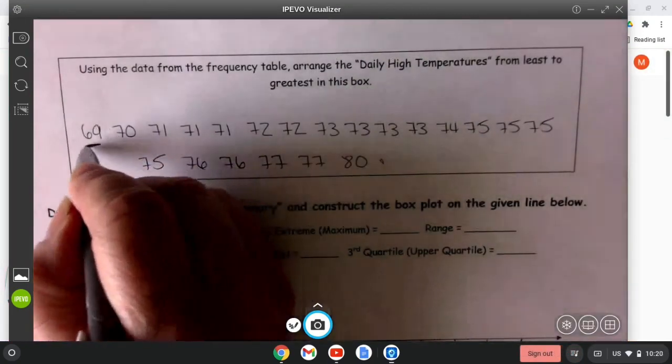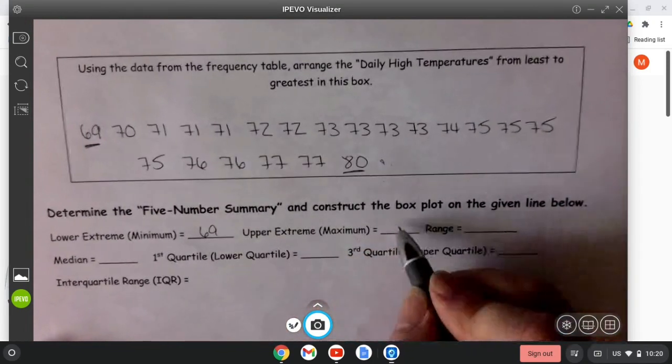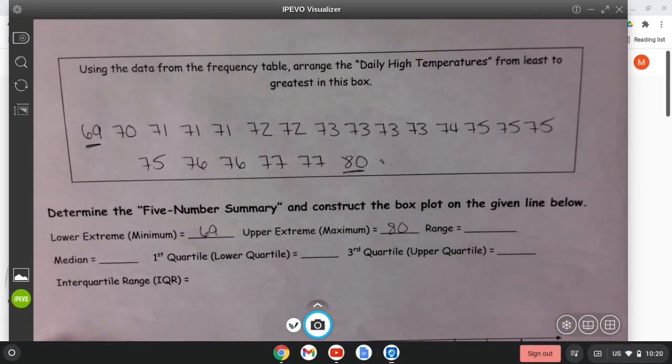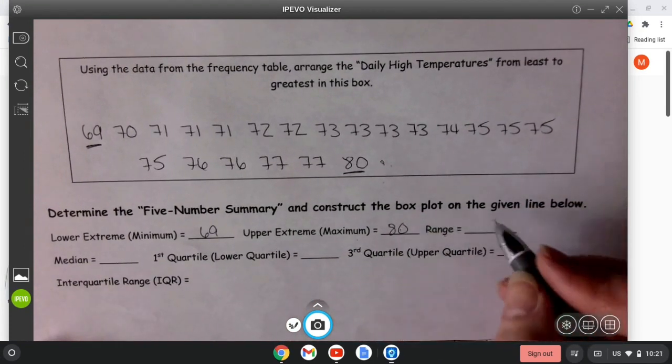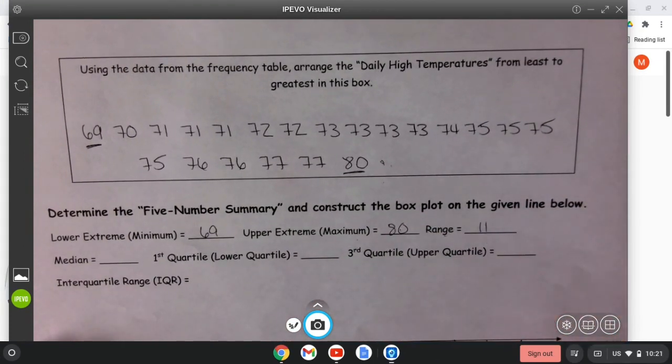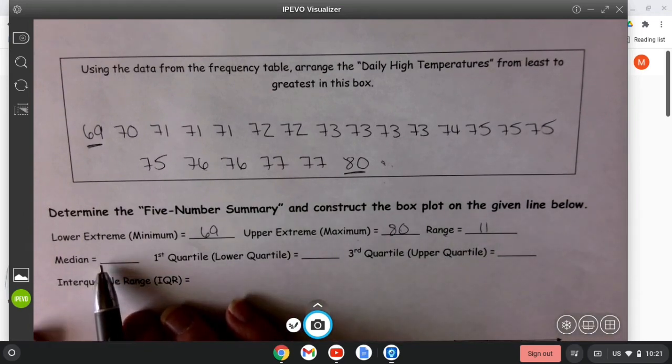The lower extreme is just the lowest number so that's going to be 69. The highest number is of course 80, which we've talked about before, and the range of my graph is going to be 80 minus 69 which is 11. And then we go to the next thing which is the median.